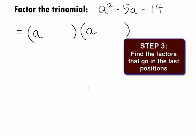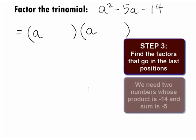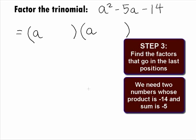In Step 3, we want to find the factors that go in the last positions. Because it is the reverse of the FOIL method, this means we are looking for two terms whose product is negative 14 and sum is negative 5.